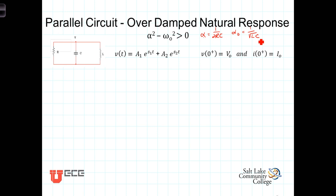S1 and S2 were found to be equal to -α ± √(α² - ω₀²). We're looking at the case where α² - ω₀² > 0, thus the value under the radical is positive, and S1 and S2 are two distinct real values that can be calculated from the values of R, L, and C.